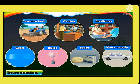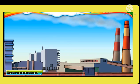Farming tools, clothes, medicines, glass, bulbs, soaps and motor vehicles — these factories are usually situated in cities.